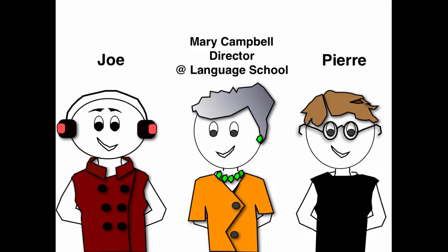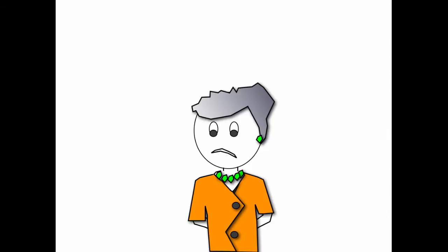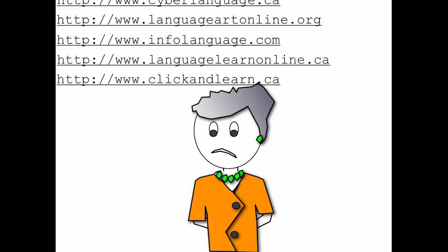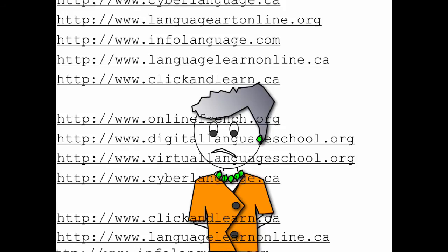When the two young employees debriefed her, Mary didn't quite understand the language they were using. She asked to get more information about the solutions they were proposing. Pierre and Joe both sent Mary a list of over 20 hyperlinks.